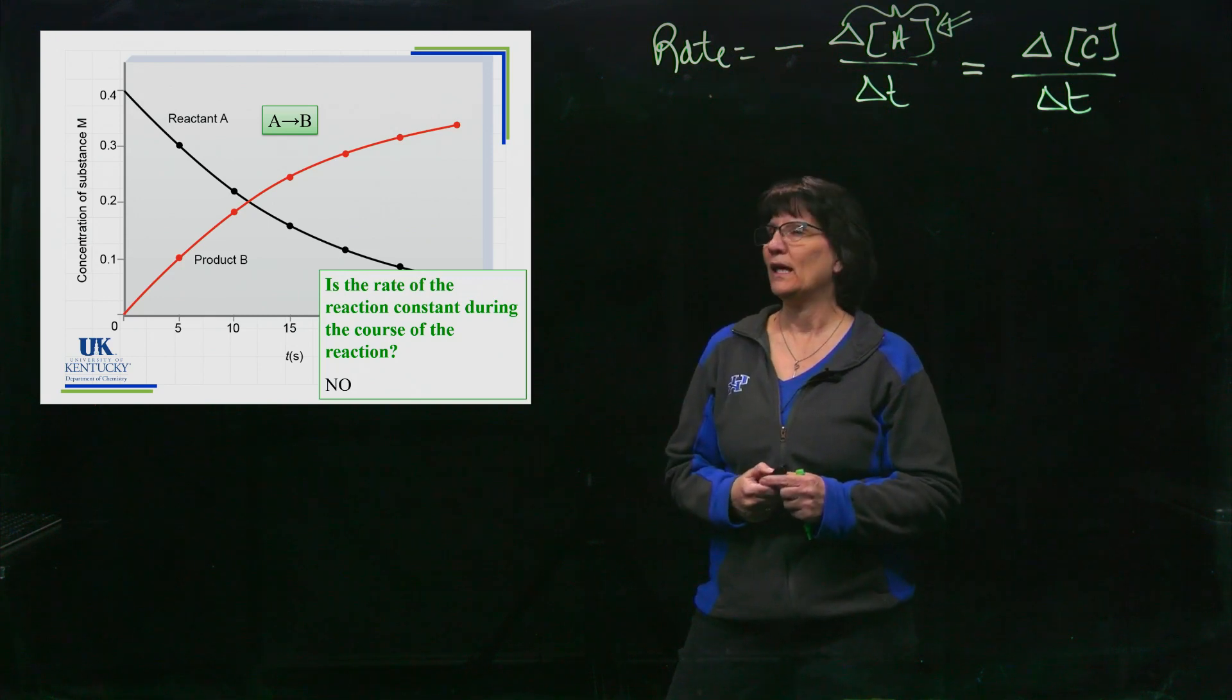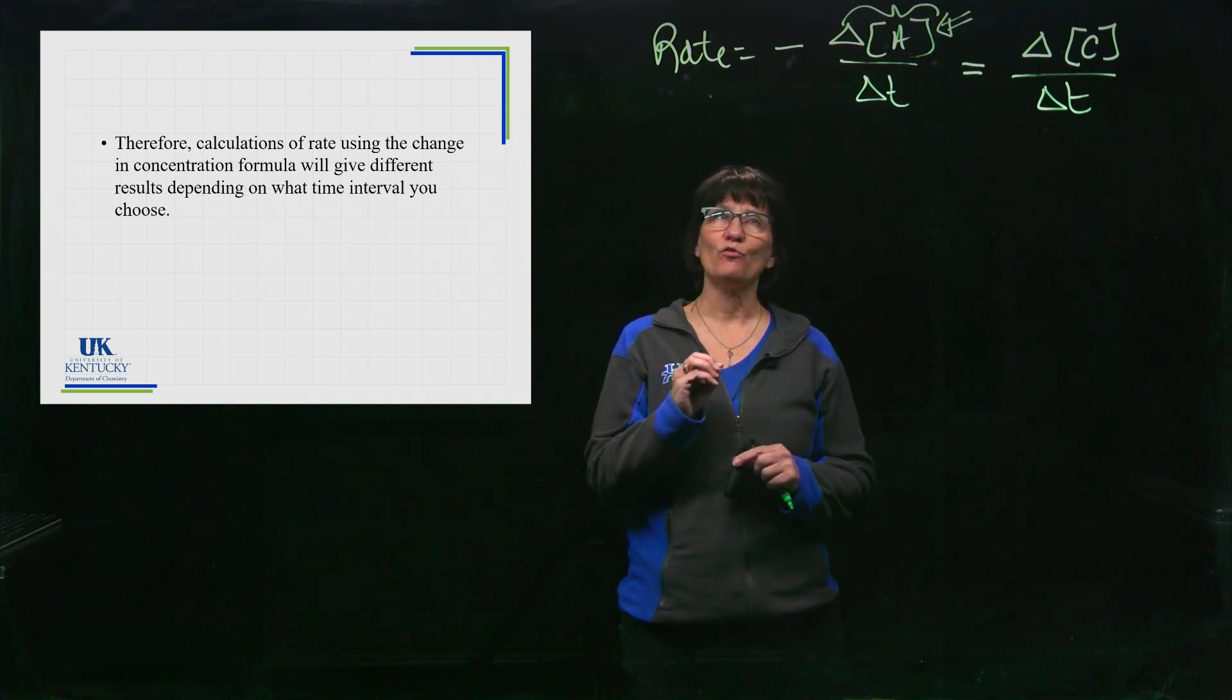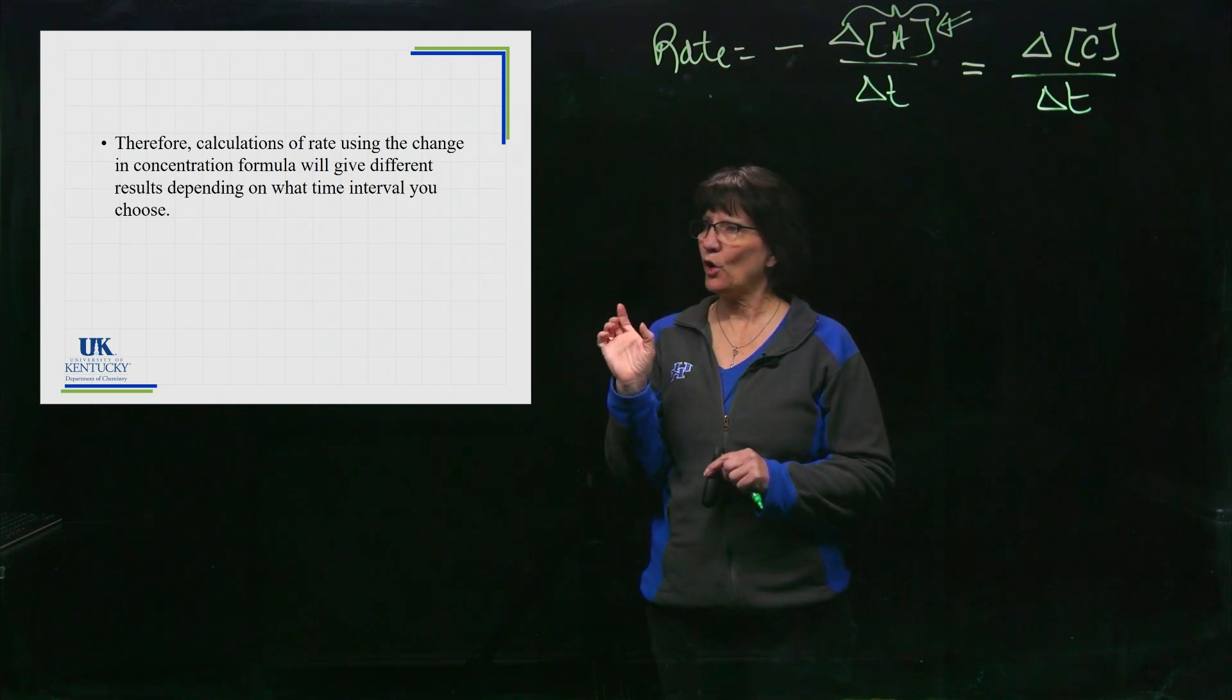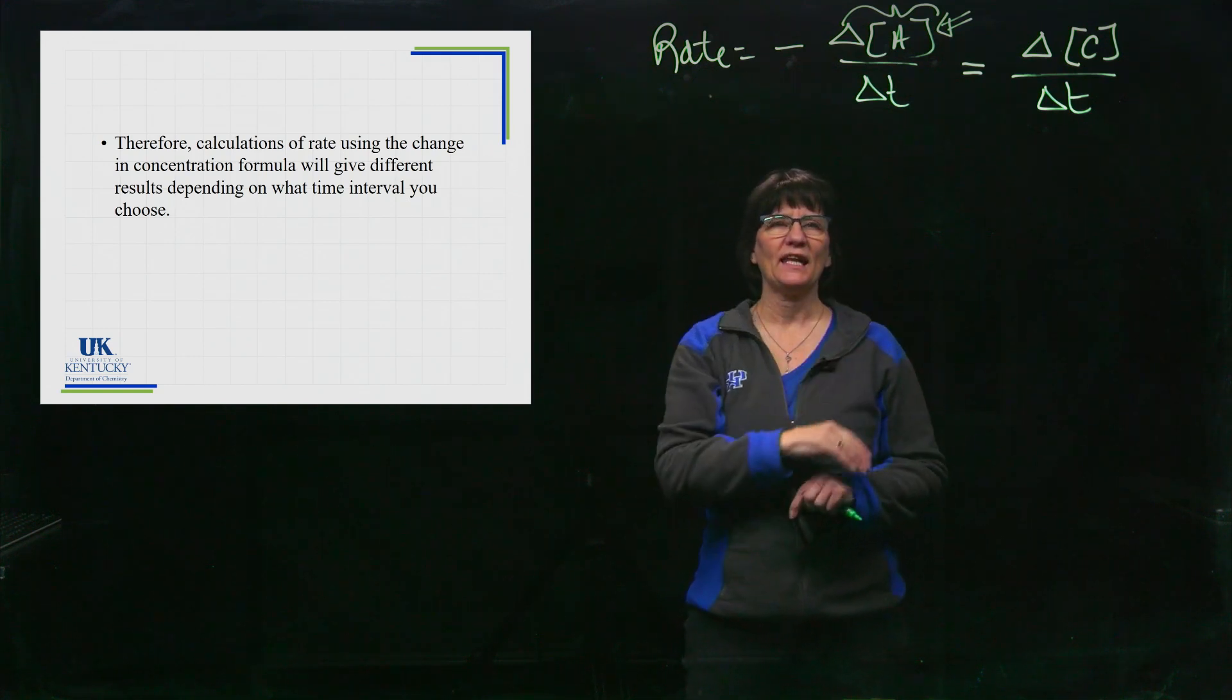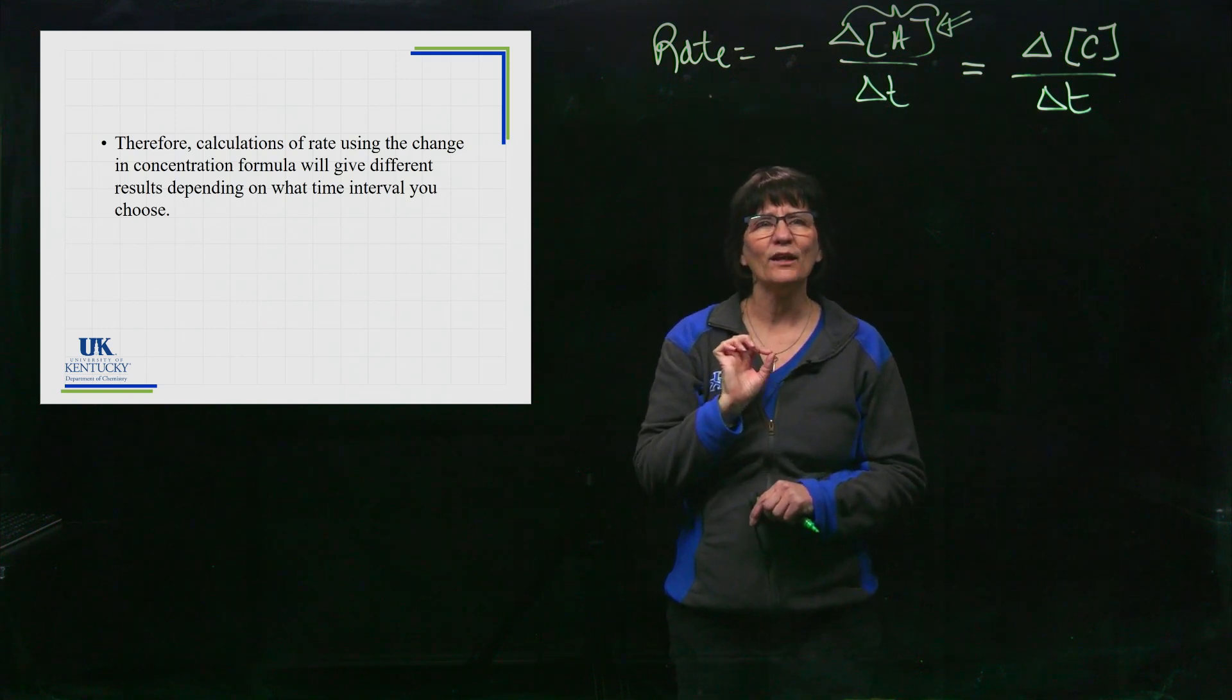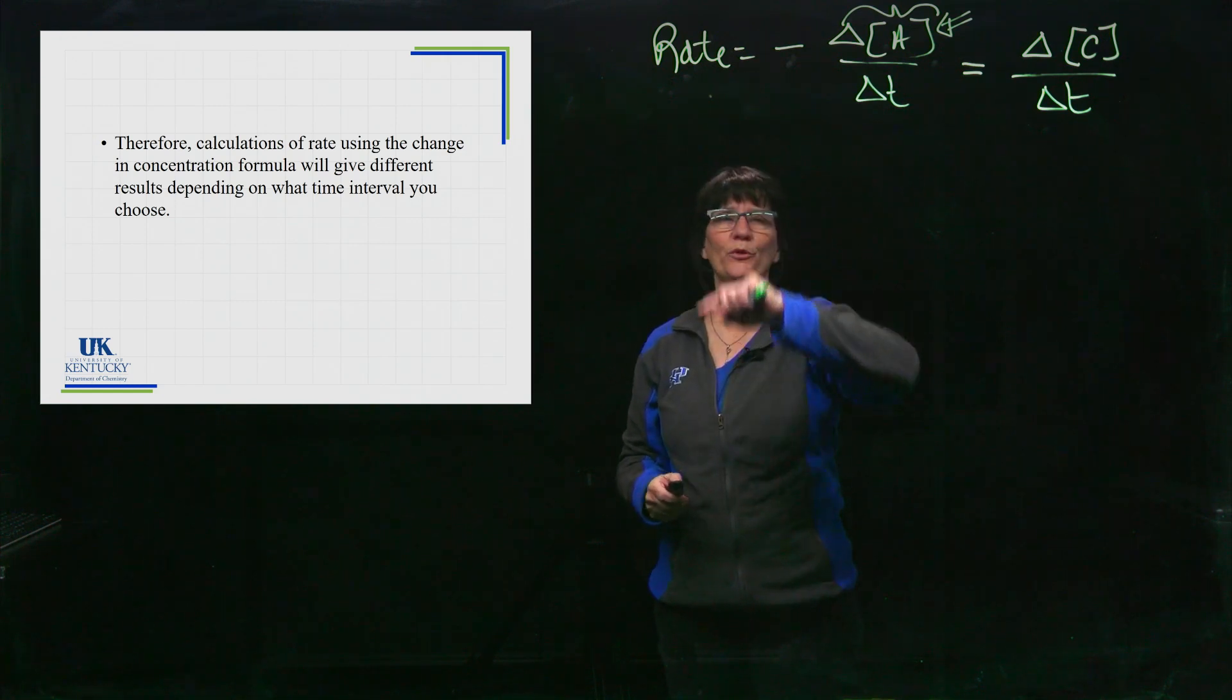Okay, so calculations of rate using this method are going to be different depending upon which time interval are you looking at. Are we looking at a five second interval at the very beginning? Are we looking at a five second interval further down? Are we only measuring it in a one-second interval, final minus initial, over that one second? It really depends on the interval of what the rate of the reaction will be.